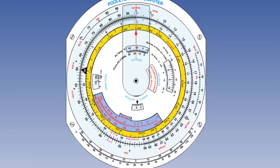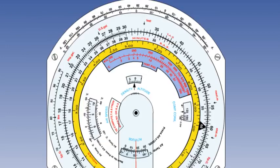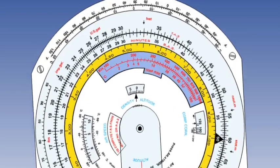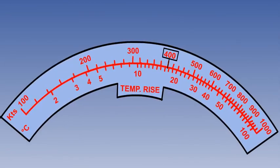The nav computer is the recommended way to find ram rise in exams, and is used in multi-crew aircraft if no air data computer is fitted. On the slide rule face of the nav computer, there is a blue scale — the outer scale is true air speed and the inner scale is ram rise. If the TAS is 400 knots, the ram rise is plus 17 degrees.